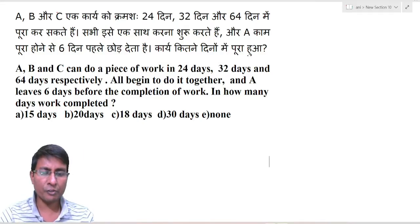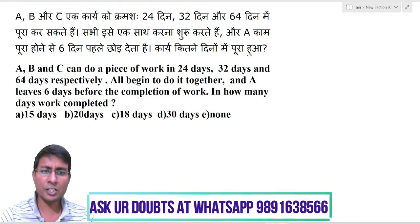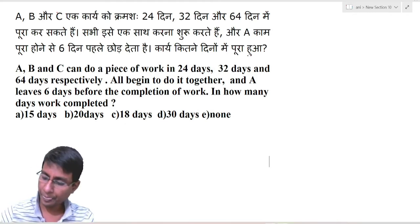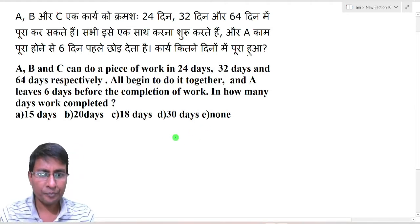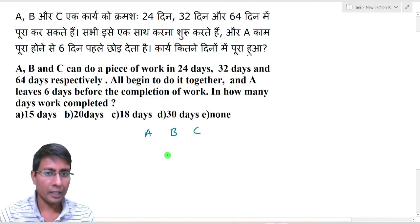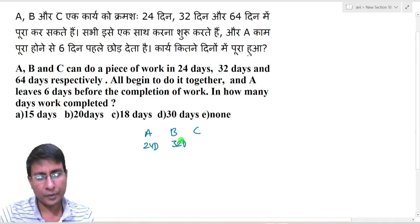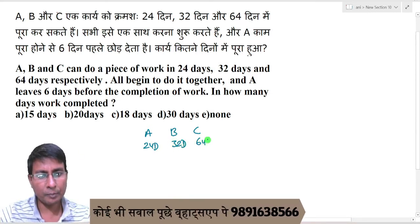A, B, and C can do a piece of work in 24 days, 32 days, and 64 days respectively. All begin to do it together, and A leaves 6 days before the completion of the work. In how many days is the work completed? A, B, and C individually complete the work in 24 days, 32 days, and 64 days.